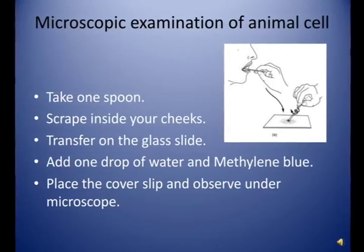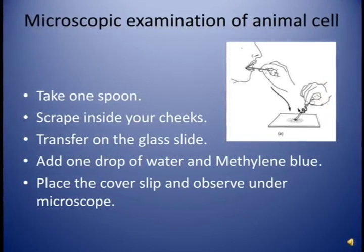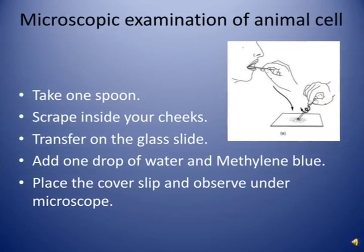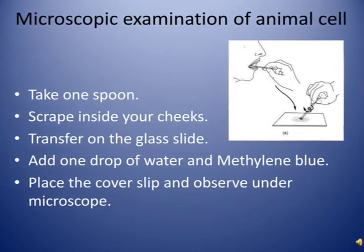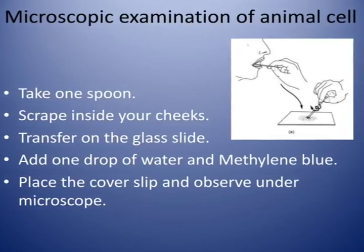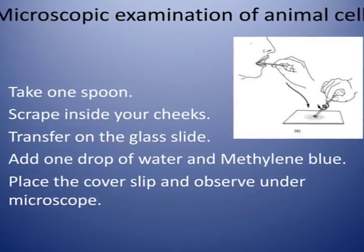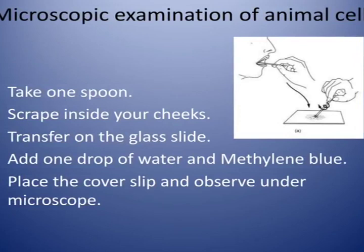Likewise, we will move to the microscopic examination of animal cells — how an animal cell looks under the microscope. Take an ice cream spoon or any spoon, scrape the inside of your cheeks, and transfer it onto a glass slide. Spread a drop of water, add a drop of methylene blue, place the cover slip, and observe under the microscope.